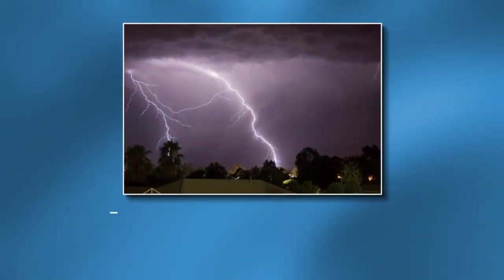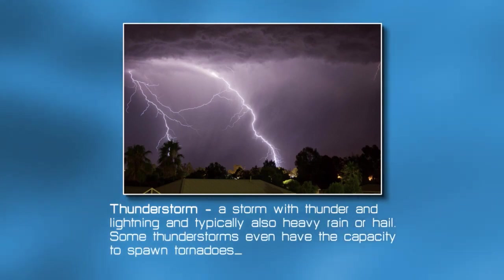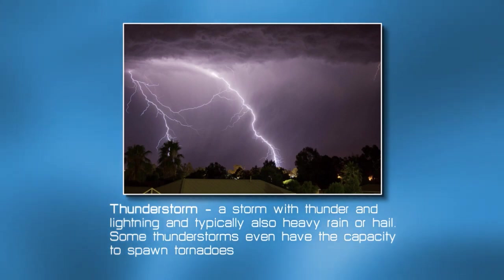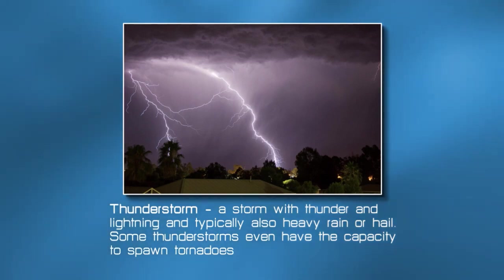Before we get into the different types of thunderstorms, I wanted to start with a broad general definition. A thunderstorm is going to be any storm capable of producing lightning and thunder, and one that maybe has the capacity to form hail, high winds, and really heavy sudden downpours of precipitation. They might even, although it's not a requirement, have the capacity to form tornadoes as well.